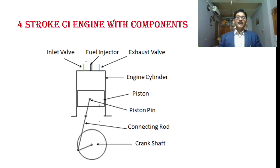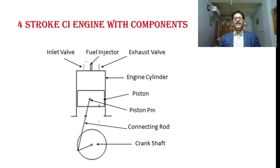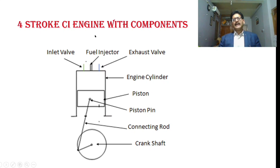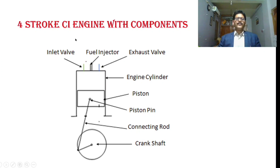Coming to the engine components, we have discussed the components in detail while discussing the four stroke spark ignition engine. More or less the components are the same, but there are certain components which are added in the case of the four stroke CI engine and some components are removed. The components which are added are the fuel injector and the fuel pump. The carburetor is removed in the compression ignition engine, which is an integral part of the spark ignition engine.